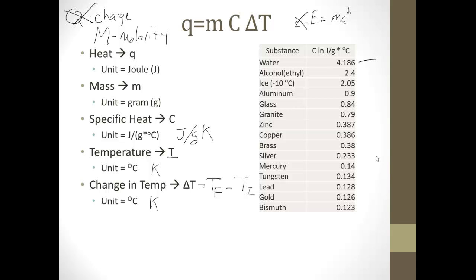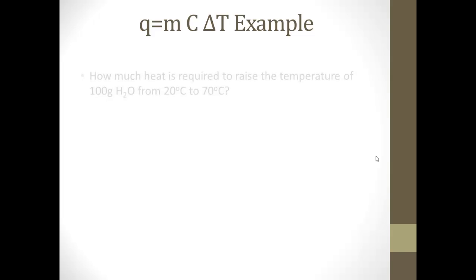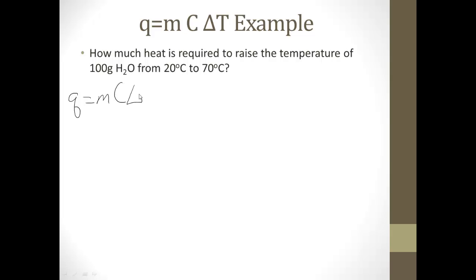Let's do an example problem here. How much heat is required to raise the temperature of 100 grams of water from 20 degrees Celsius to 70 degrees Celsius? First thing we're always going to do, that we're used to by now, first thing we do is write the formula, Q equals MC delta T. So let's say Q is equal to, M equals, C equals, delta T equals, and delta T is equal to the final temperature minus the initial temperature.